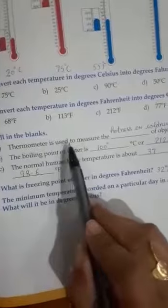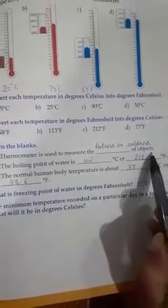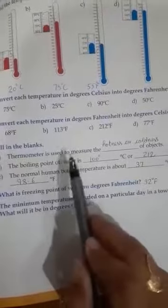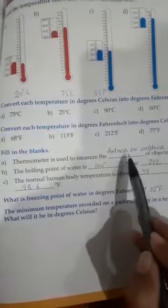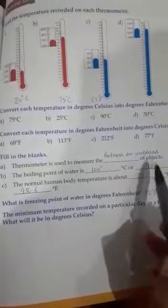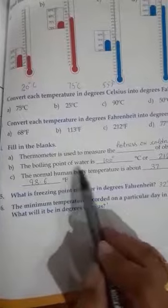First question: thermometer is used to measure the dash of objects. Thermometer is used to measure the hotness or coldness of objects. Next is the boiling point of water.